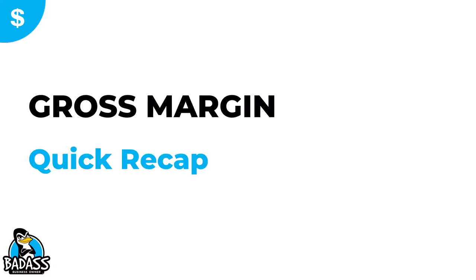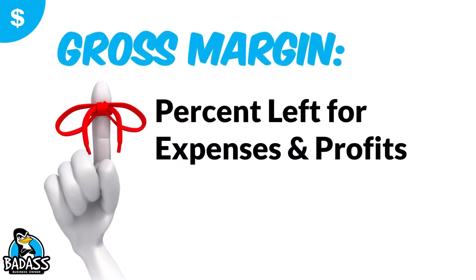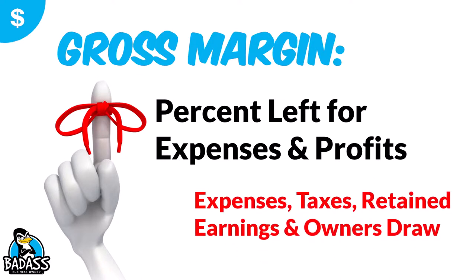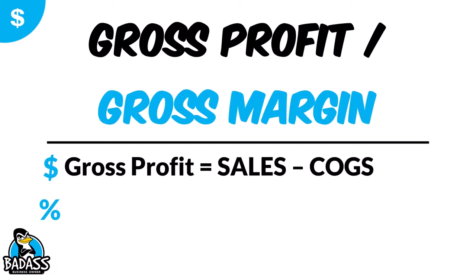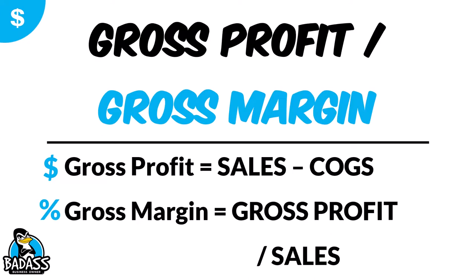Let's do a quick recap. Gross margin is the percent left over to cover your expenses and profits — it's after sales minus your cost of goods. Your gross margin has to cover your expenses, taxes, retained earnings, and any owner's draw. That's why it's important to know your gross margin dollars and percentage. If you need the dollars: sales minus cost of goods gives you gross profit. To get the gross margin percentage: gross profit divided by total sales.